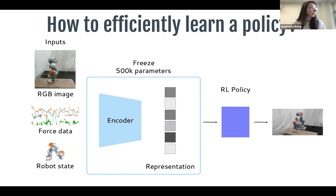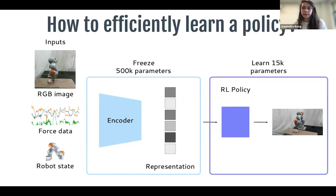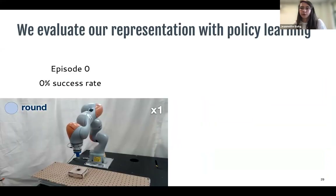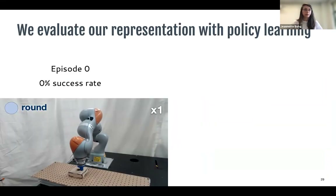After learning this representation using these self-supervised objectives, we freeze the encoder weights and take the representations as state input into an off-the-shelf deep RL algorithm for policy learning. Because we separate representation learning from policy learning, the representation can generalize to task instances in the same family. This also makes policy learning more sample-efficient — we only need to learn 15k policy parameters, just 3% of the entire encoder network.